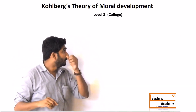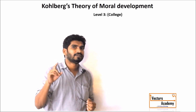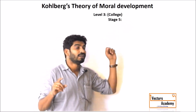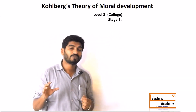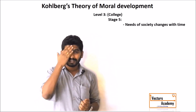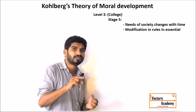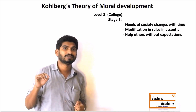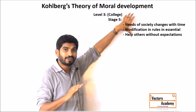Then comes level three, observed after junior college. Most people reach level three, but very few are able to get through stage five and six. In stage five, they think that the requirements of society can be fulfilled only if there are certain modifications in the rules. They realize that the rules are not inflexible — they can be modified according to the needs of the people. They realize that rules are meant for society and not society for the rules. This is where most people fail to reach.